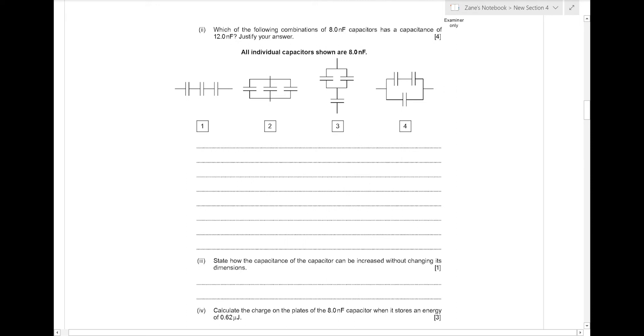So for example, setup number 1: capacitors in series, we have to add up with reciprocals. So we'd have 1 over 8 plus 1 over 8 plus 1 over 8, giving 3 over 8. And remember to flip that upside down, we get 8 over 3 nF, which is clearly not 12 nF. So definitely not number 1.